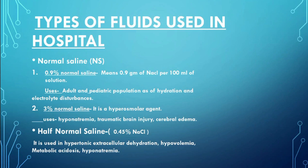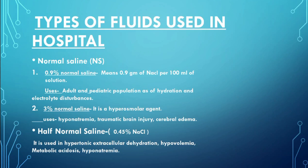3% normal saline contains 3 grams of NaCl per 100 ml of solution. It is used in hyponatremia, traumatic brain injury, and cerebral edema, where a hypertonic saline solution is required to correct low sodium levels and reduce brain swelling.